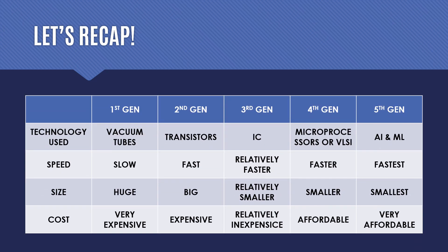Let's recap. In the first generation the main technology was vacuum tubes; second generation used transistors; third generation used integrated circuits; fourth generation used microprocessors; and fifth generation uses artificial intelligence and machine learning. Carefully observe that with each generation, computers kept getting faster, smaller, and more affordable for the common person.